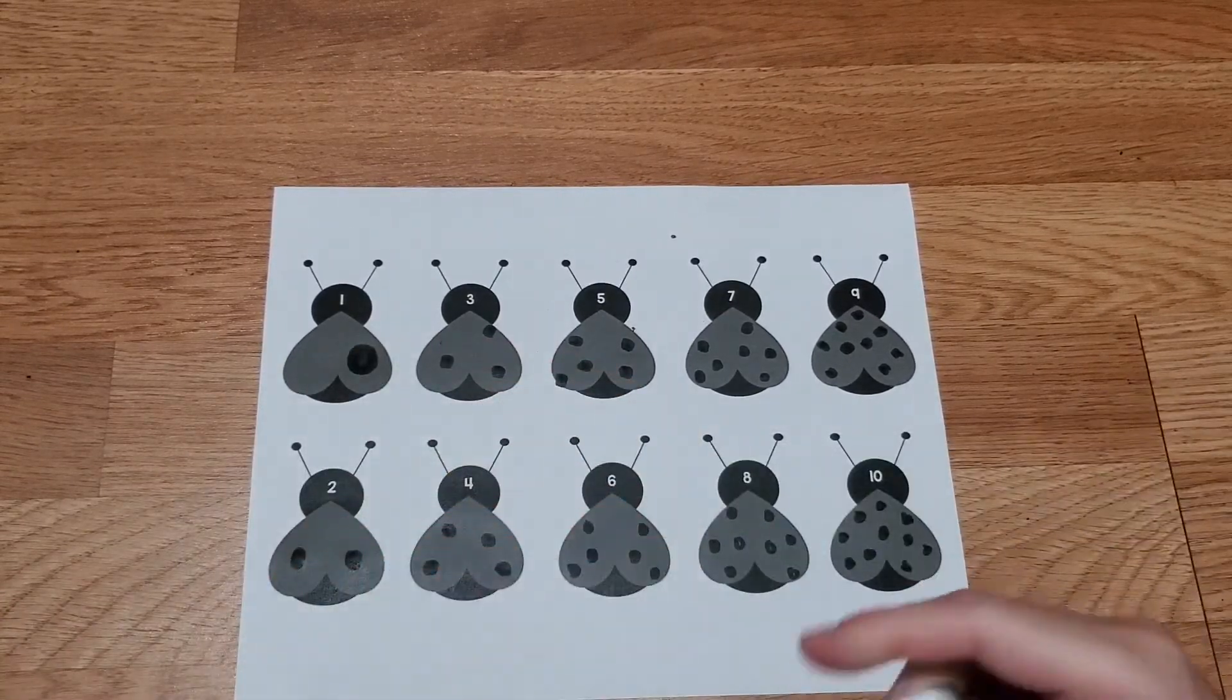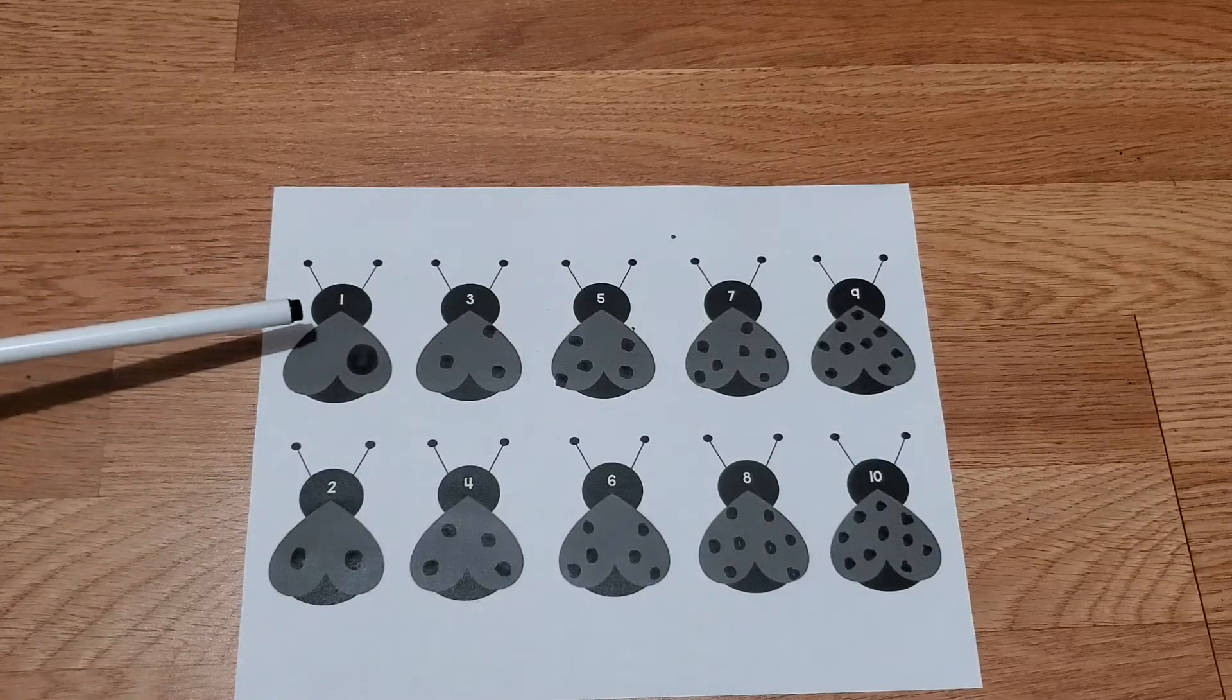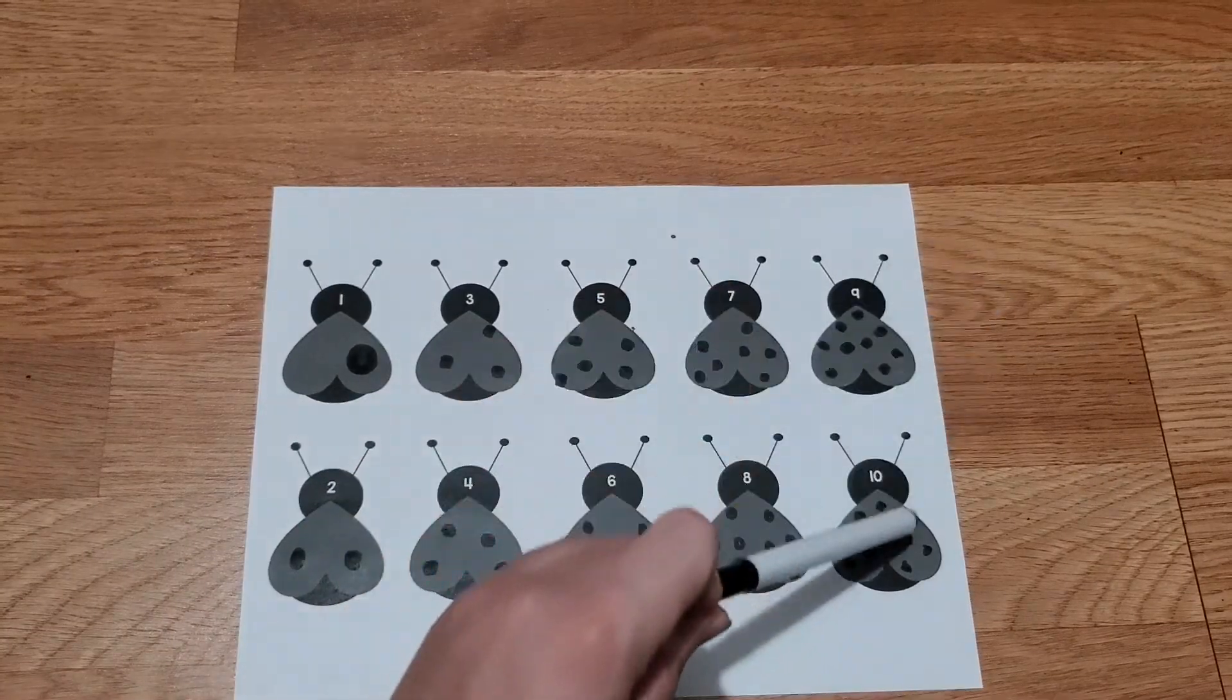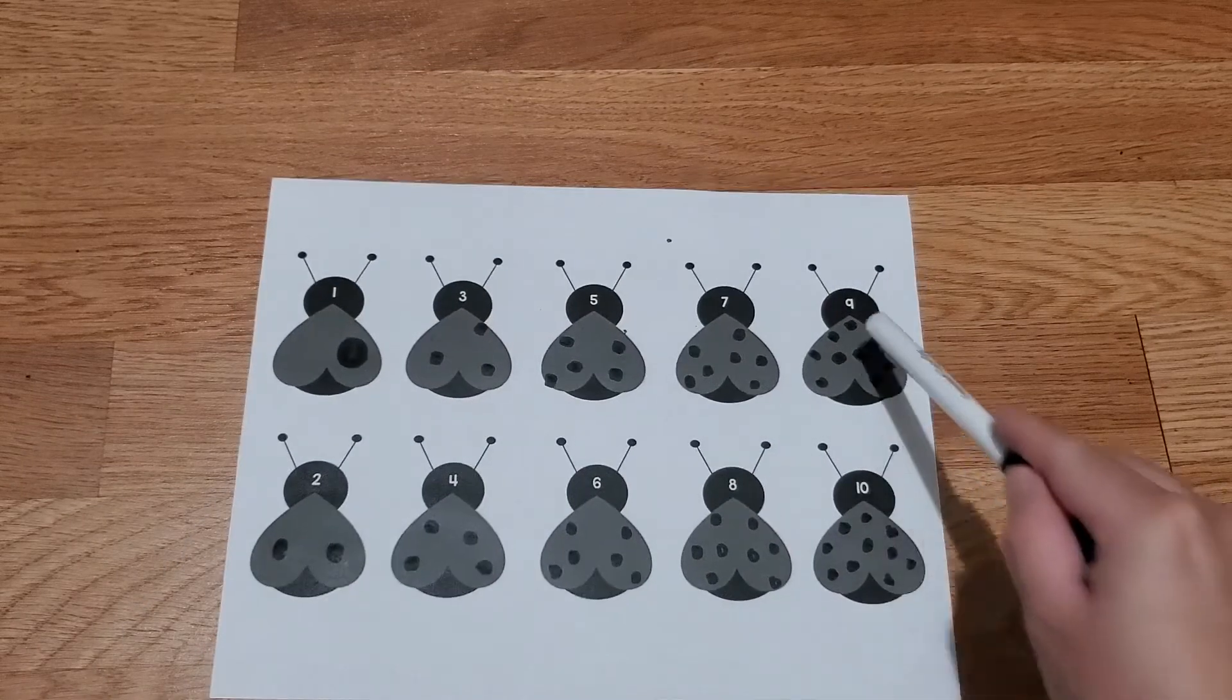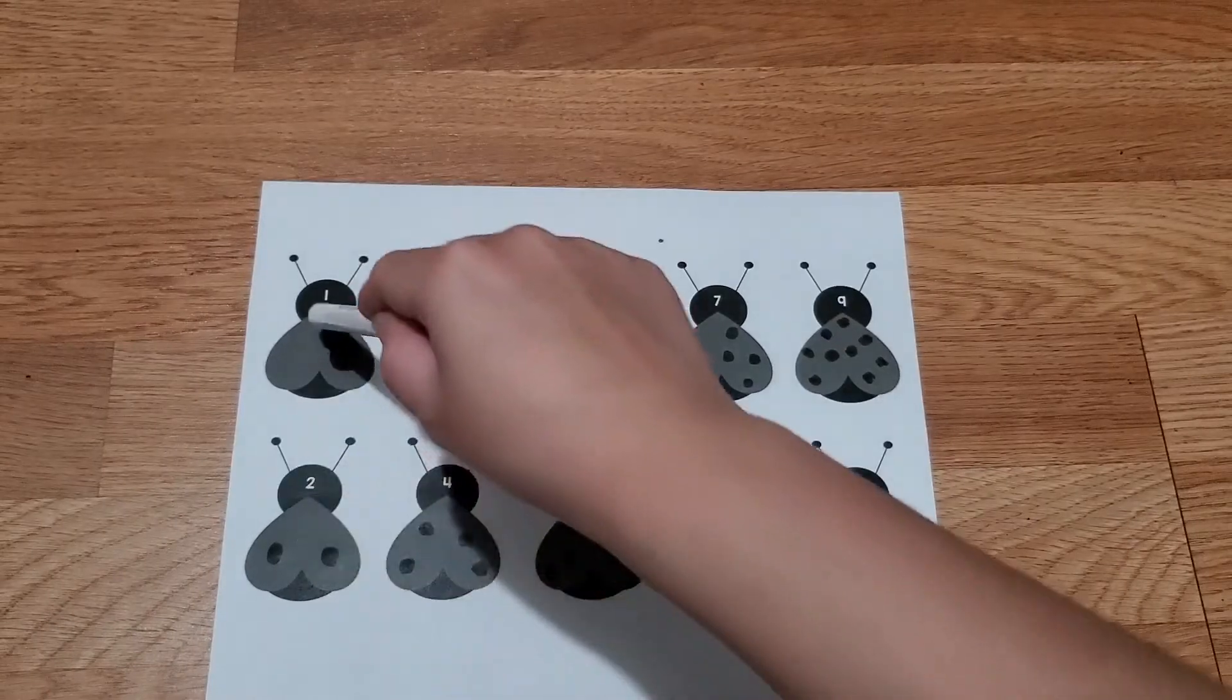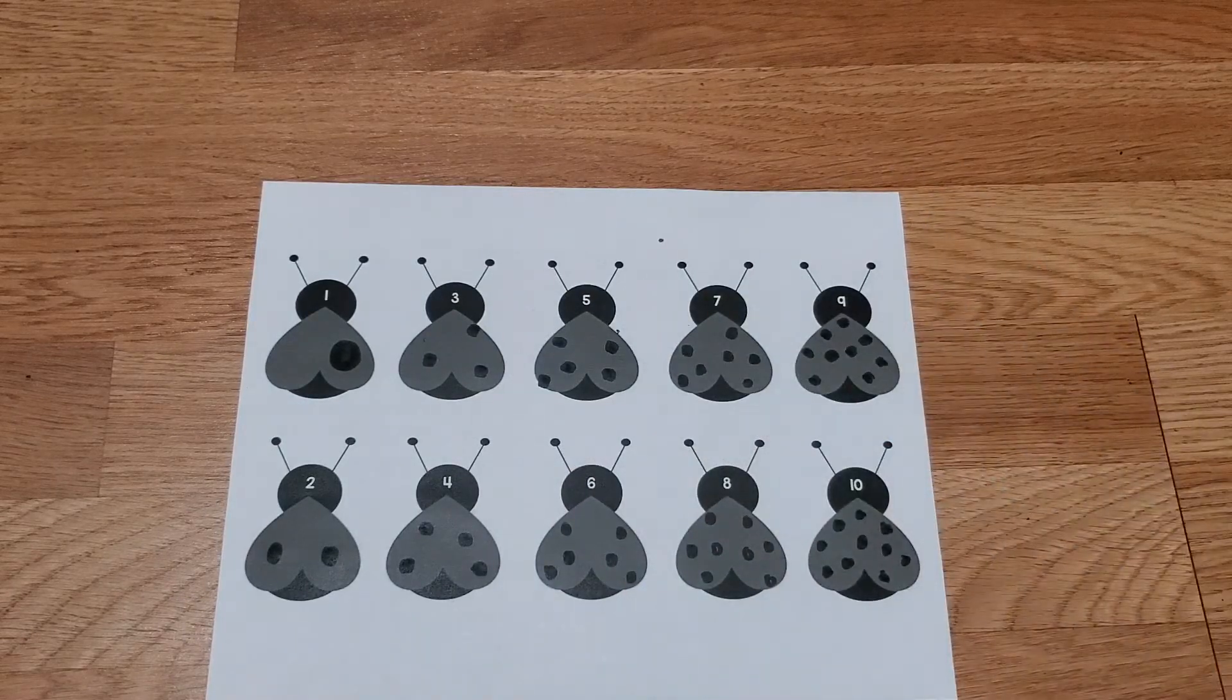So now let's count our ladybugs. We're going to count it regularly: one, two, three, and then we're going to do the odds and even numbers. Ready? Let's count regular: one, two, three, four, five, six, seven, eight, nine, ten. And oh, let's do backwards. Ready to start from ten? Ten, nine, eight, seven, six, five, four, three, two, and one. Now let's do odd numbers, that's the top row: one, three, five, seven, nine. Let's do the even numbers: two, four, six, eight, ten.